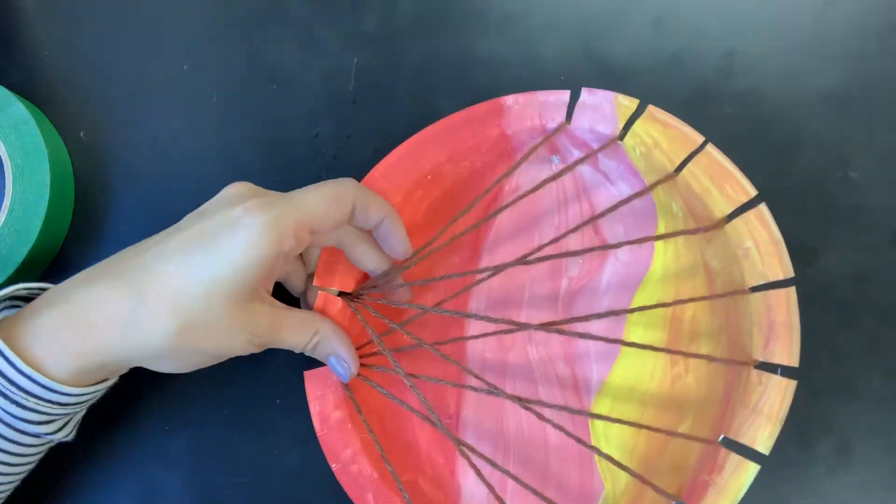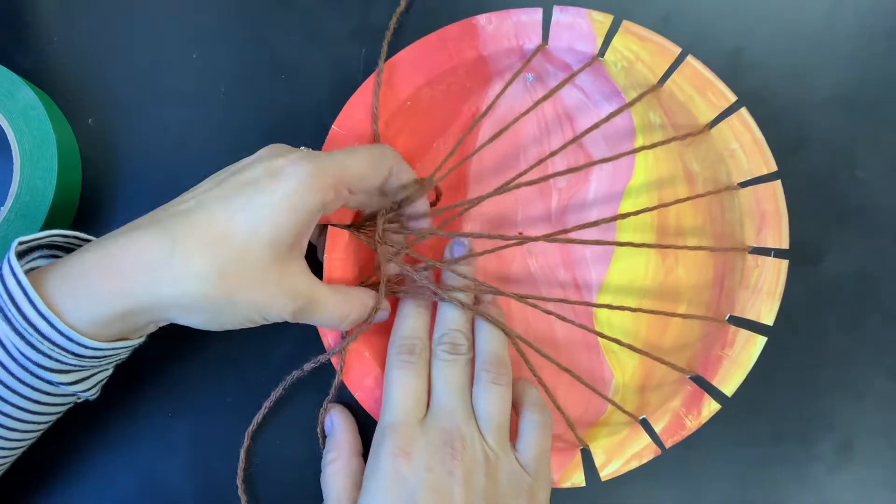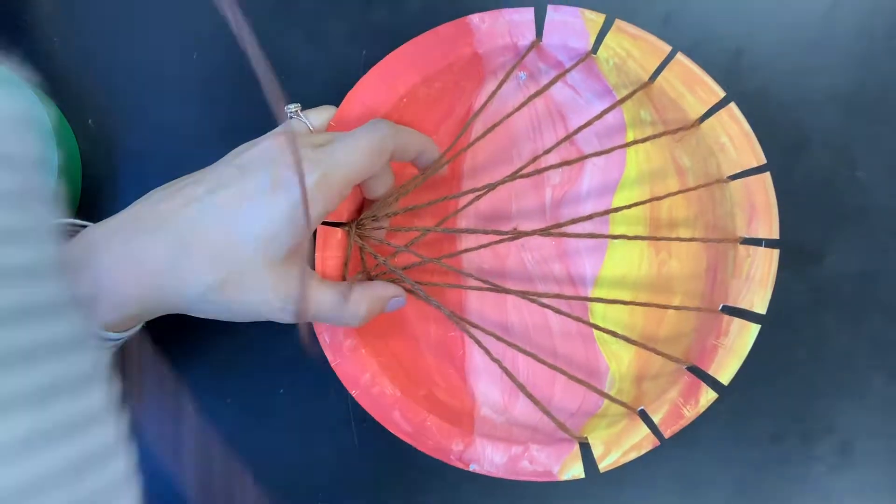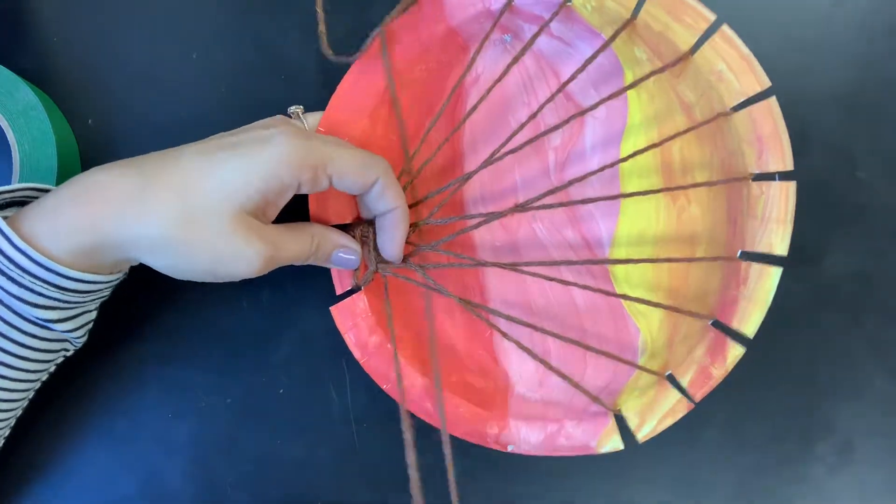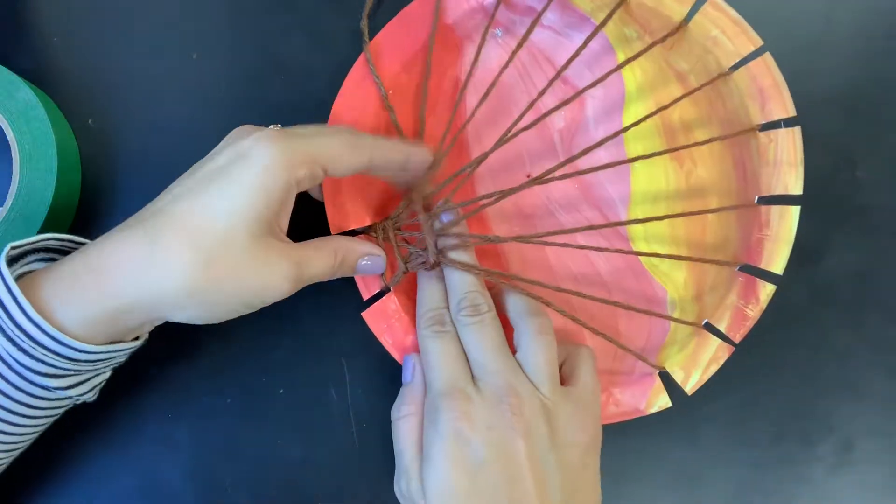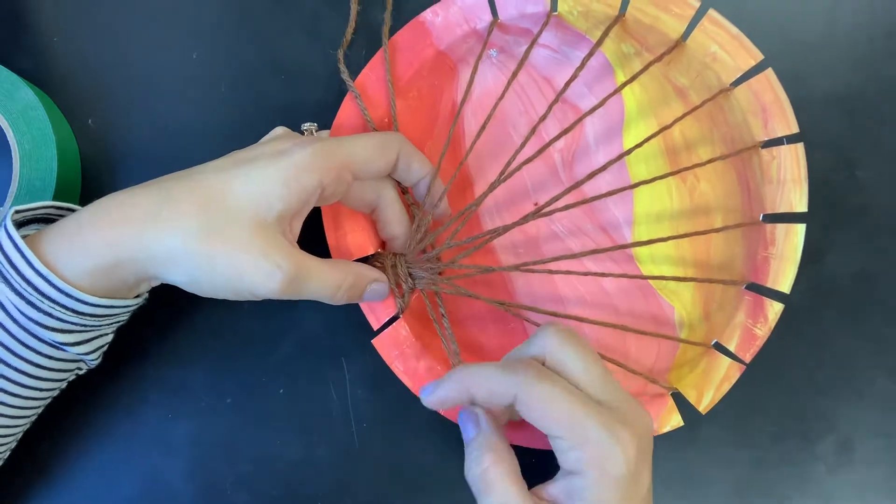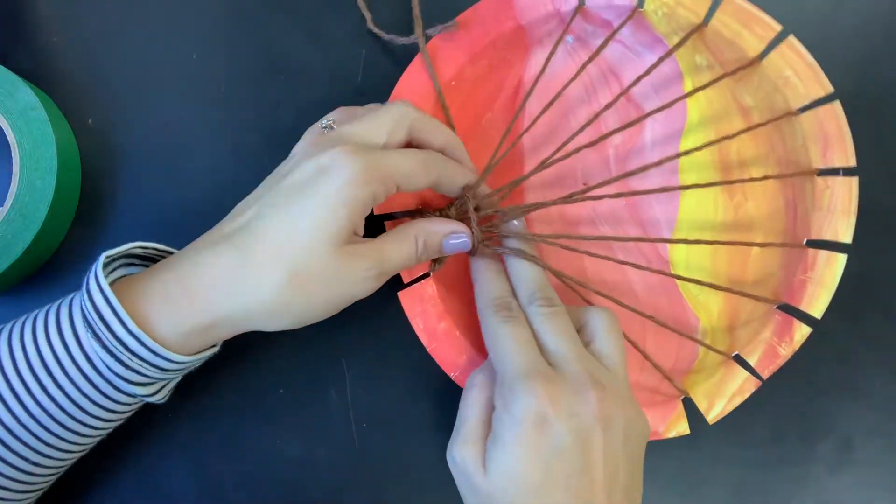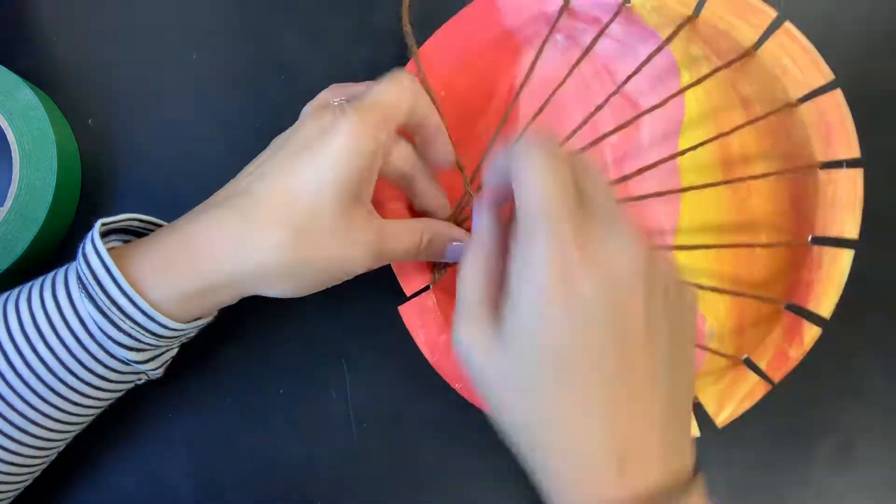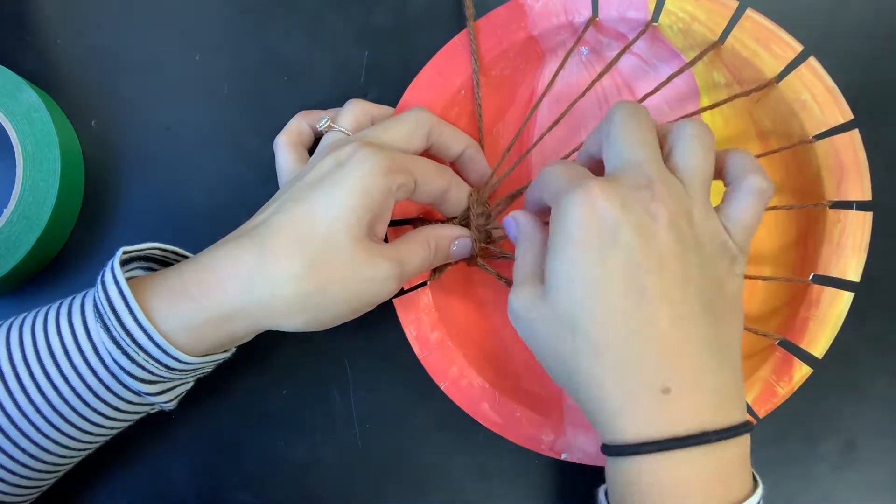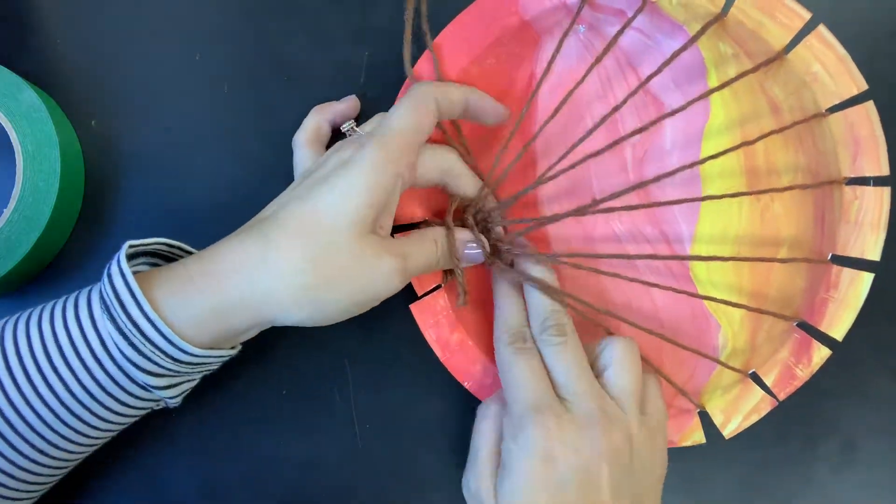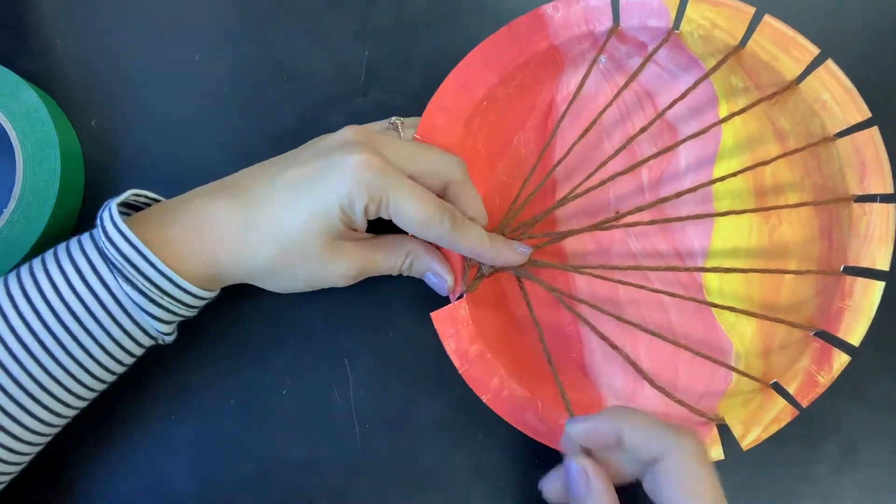Then take the end of your string and start wrapping it around all of those branches. We're making the tree trunk and we keep going around and around. Try not to pull too tight. Also make sure you're not wrapping your strings on top of each other. They should be next to each other so every time you have a new row of string. Keep going until you're happy with the length of your tree trunk.